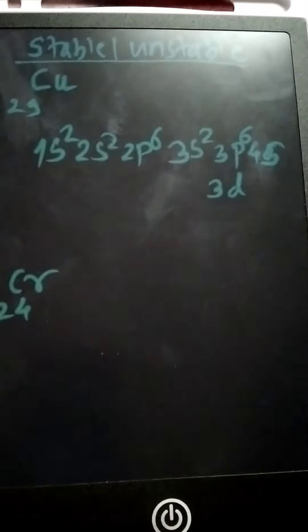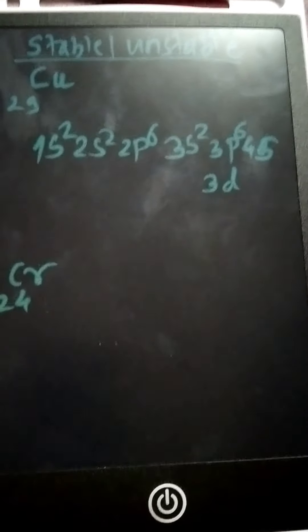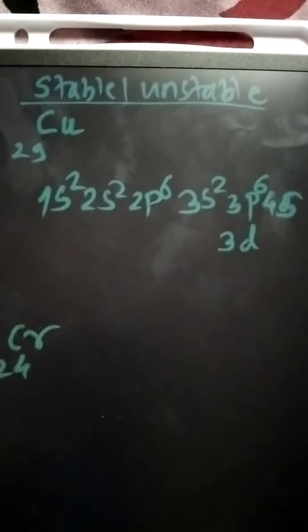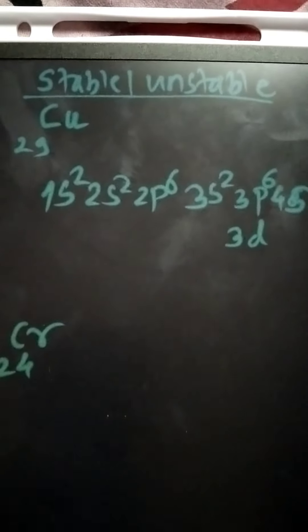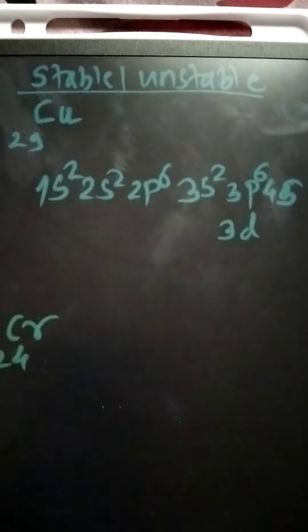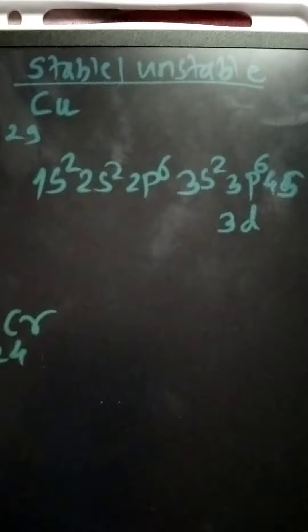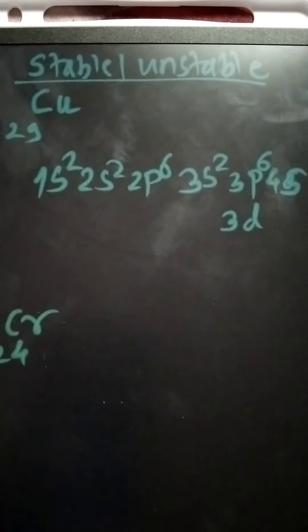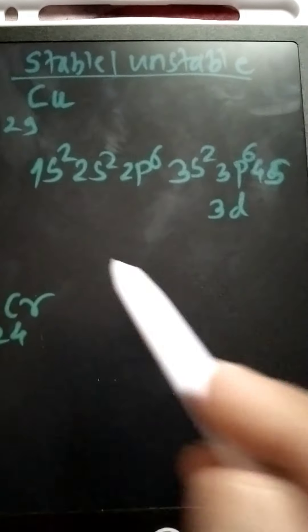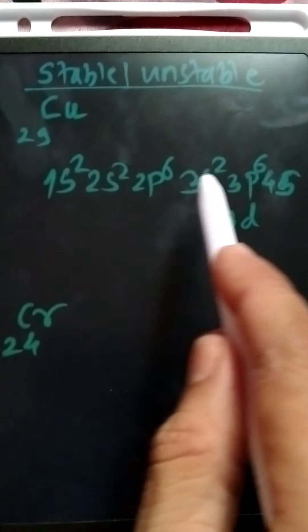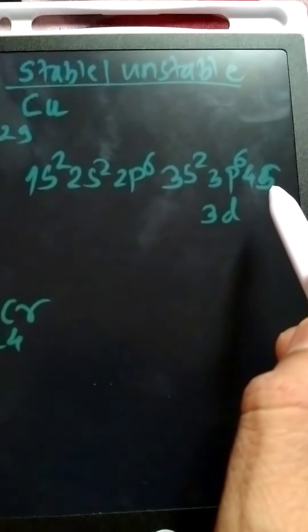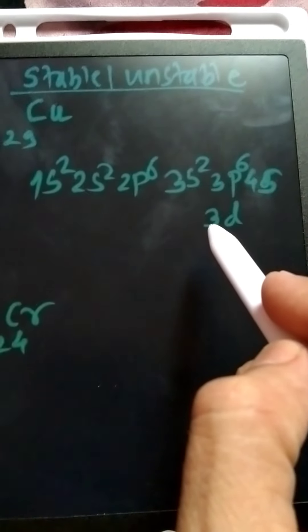Students will learn what is the meaning of stable and unstable electronic configuration. If we study the configuration of copper, atomic number 29, that is a 3d element from the d block. Copper has configuration 1s2 2s2 2p6 3s2 3p6, and then 4s is filled first, after that the 3d orbital.